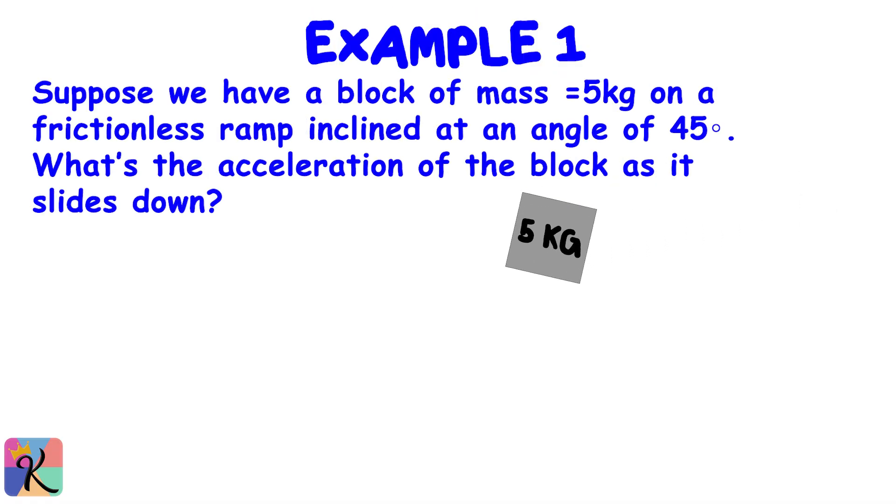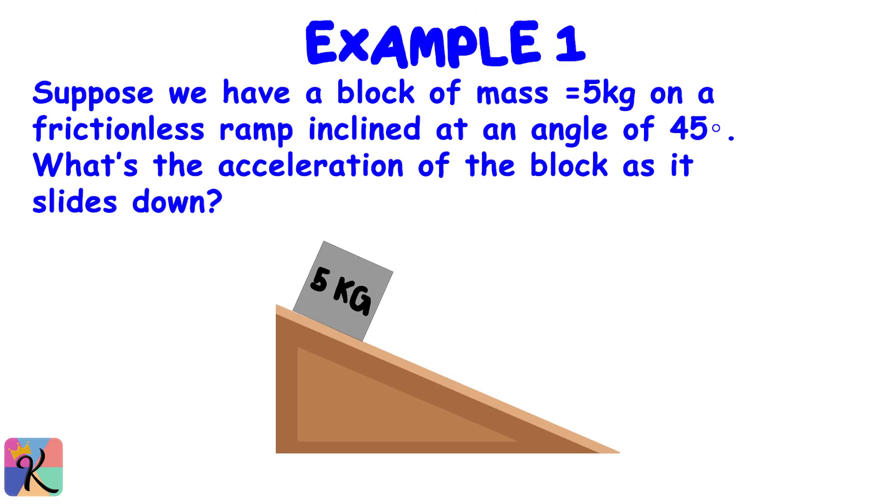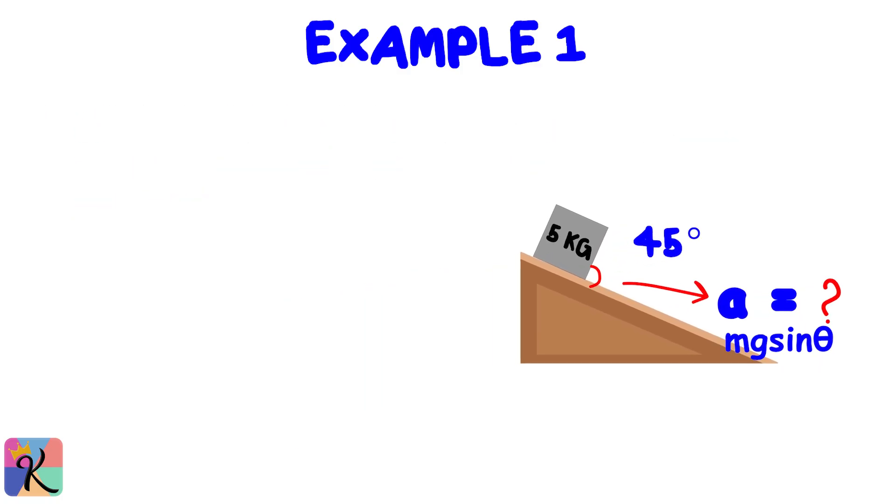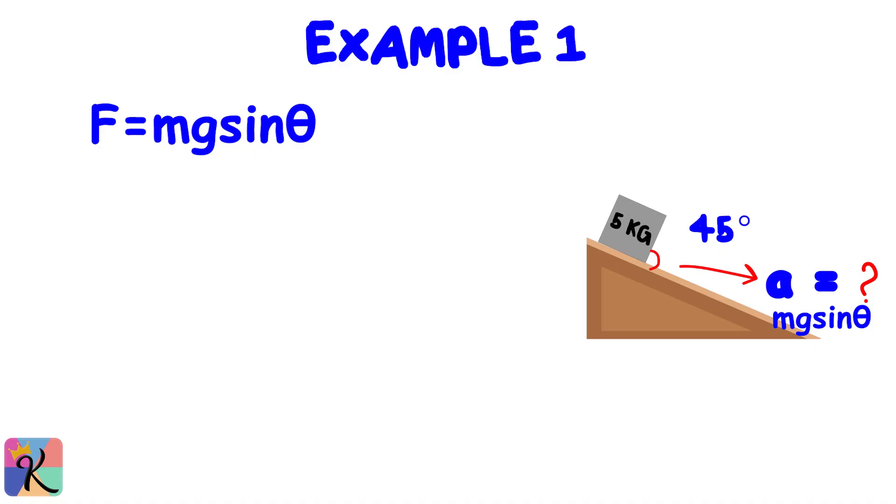Let's work through our first example. Suppose we have a block of mass M = 5 kilograms on a frictionless ramp inclined at an angle of 45 degrees. What's the acceleration of the block as it slides down? Since there's no friction, the only force acting parallel to the ramp is Mg sin theta. So the net force F = Mg sin theta. Using F = Ma, we have a = g sin theta.